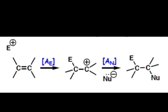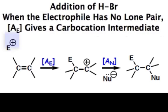And this pathway for the AD sub E2 will occur when we have an electrophile that has no lone pair, for example, a proton.